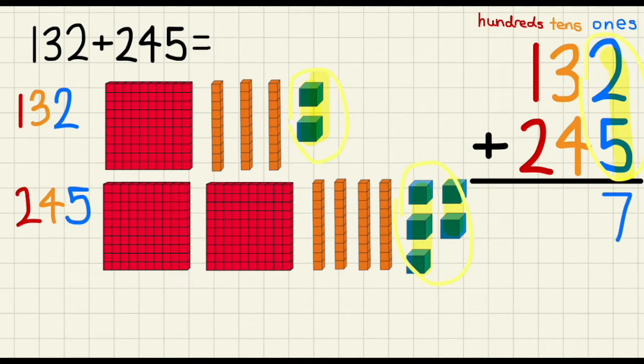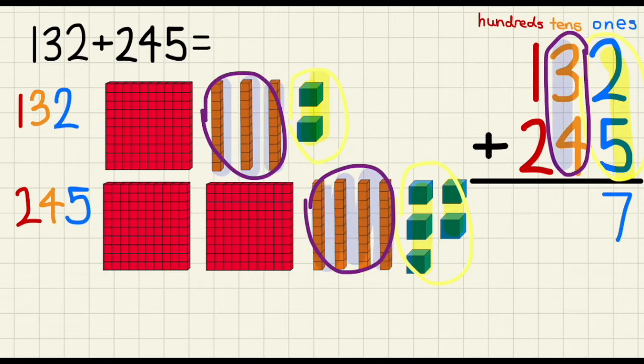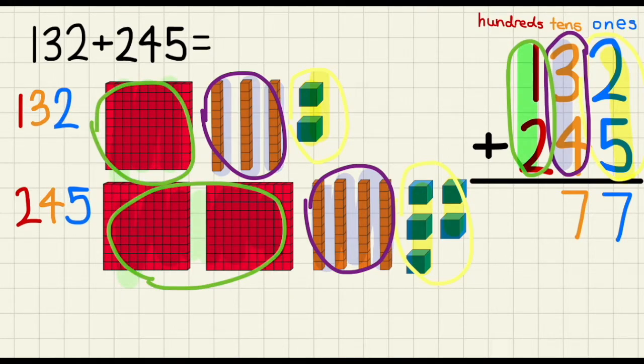So let's write that down. And now we can move on to the tens place. So we have 3 plus 4. 3 plus 4 is 7. So we can write 7 down. And lastly, we have to add the hundreds place together. So the red numbers. 1 plus 2 is? That's right, it's 3. So our answer to this question, 132 plus 245, is equals to 377.